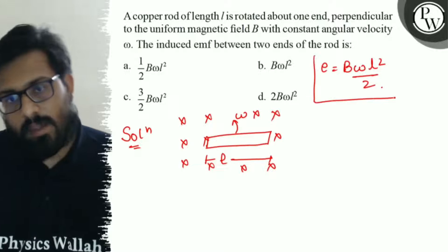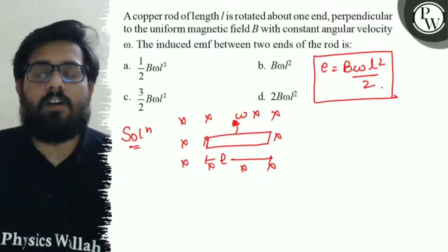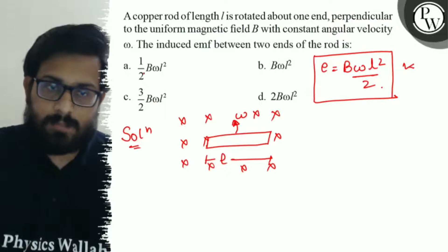This is a direct formula that the induced EMF in case of rotating rod is half B omega L square, this is the option right here.